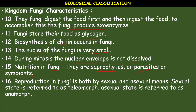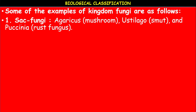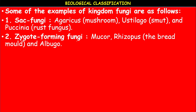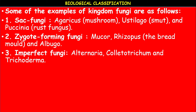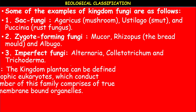Reproduction in fungi involves both asexual and sexual forms. The sexual state is referred to as teleomorph; the asexual state as anamorph. Examples: Agaricus (mushroom); Ustilago, which causes smut disease; Puccinia graminis, a rust fungus. Zygote-forming fungi include Mucor (black mold) and Rhizopus (bread mold). Fungi imperfecti include Alternaria and Colletotrichum falcatum, which causes red rot of sugarcane, and Trichoderma.